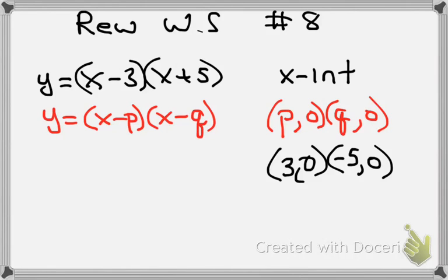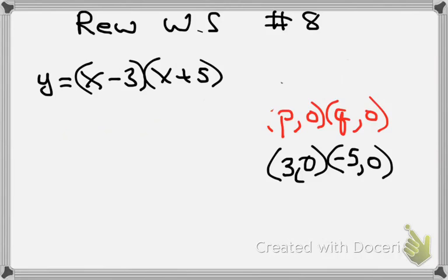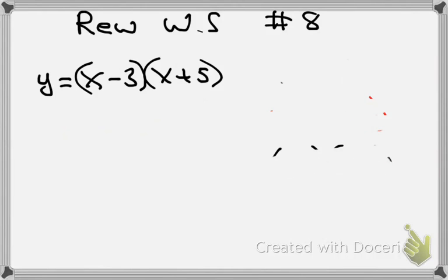So the next thing they want us to do is they want us to write it in standard form. So to write this, well, all that stuff they didn't want us to do. I was just helping you out. So to write this in standard form, what do I do? I just foil it.